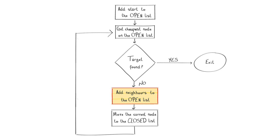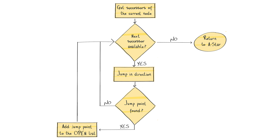This is where jump point search modifies the A* algorithm. Instead of simply adding neighbors to the open list, jump point search gets the successors of the current node — a whole new process explained shortly. We check if we have an unexplored successor. If not, we return to the A* flow. If we do, we jump in that direction. If jumping fails to locate a jump point, we loop back and look for another unexplored successor. If we did locate a jump point, we add it to the open list, stop searching in the current direction, and look for another successor. This continues until we run out of successors, at which point we return to the A* algorithm flow.